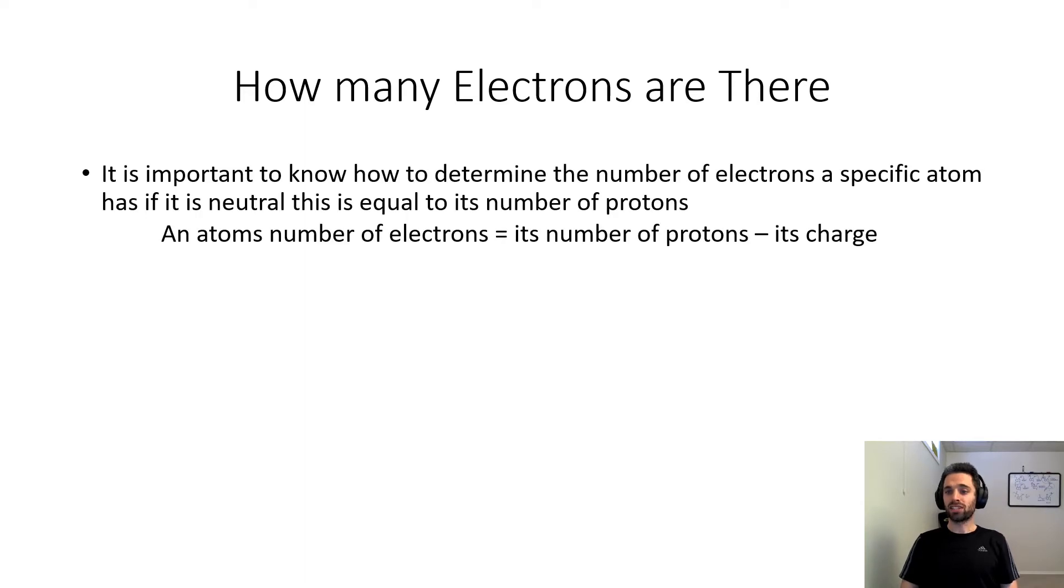It's important to know how to determine the number of electrons a specific atom has. If it is neutral this is equal to the number of protons, but more formally an atom's number of electrons is equal to its number of protons minus its charge.